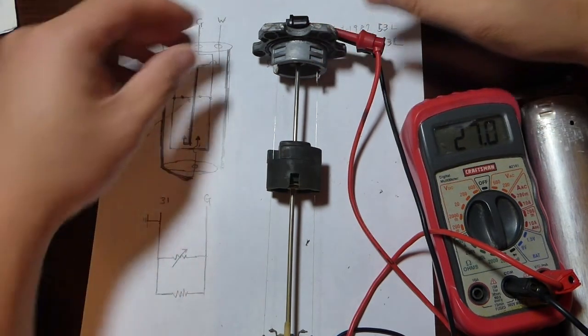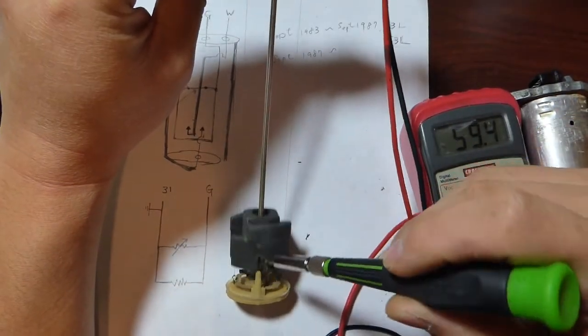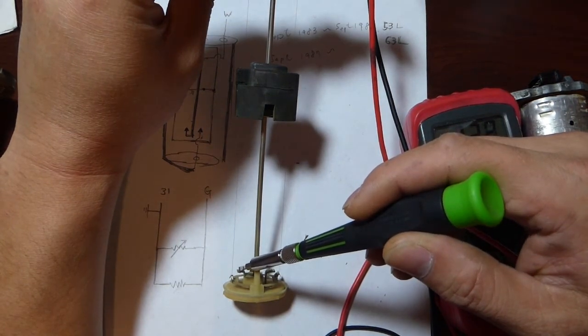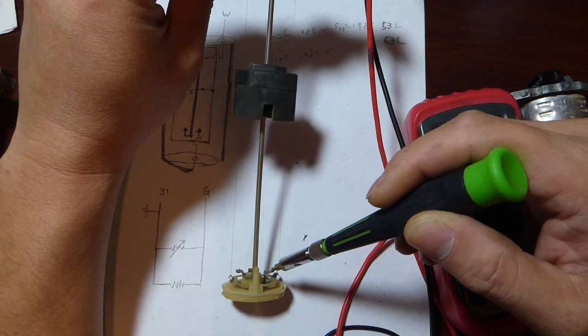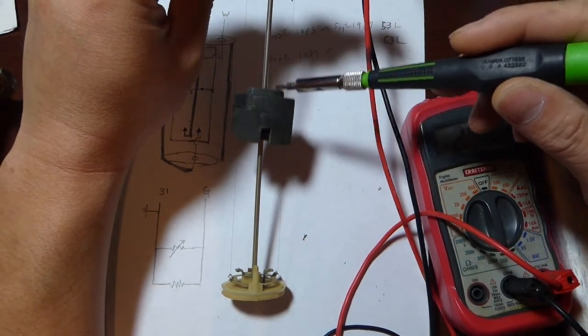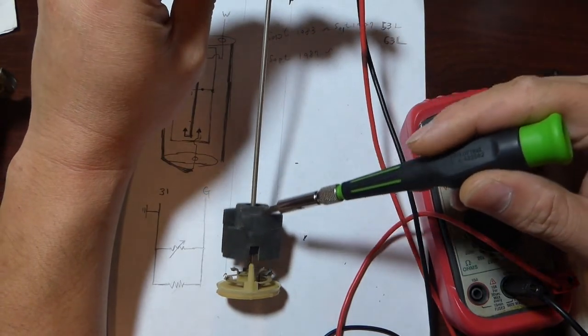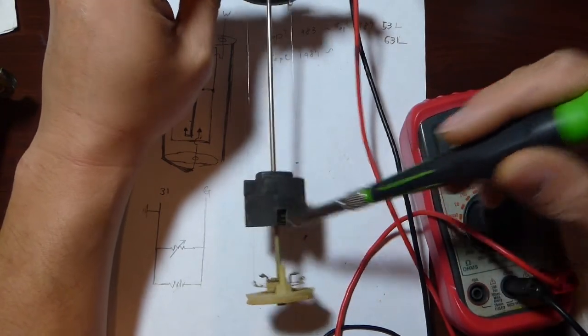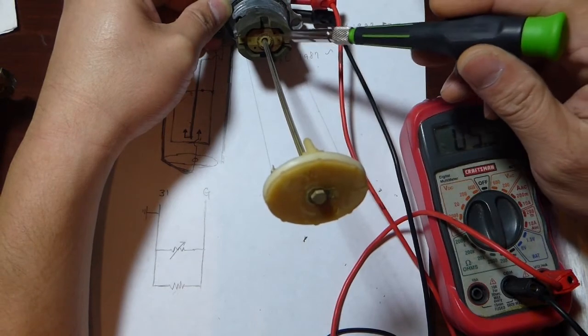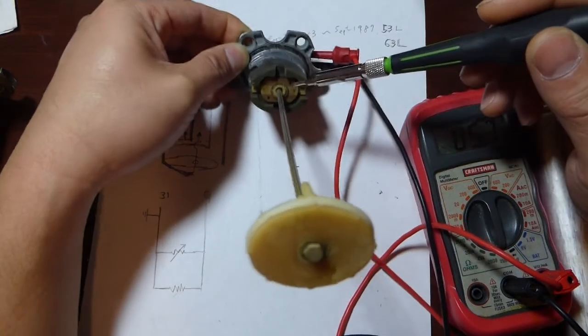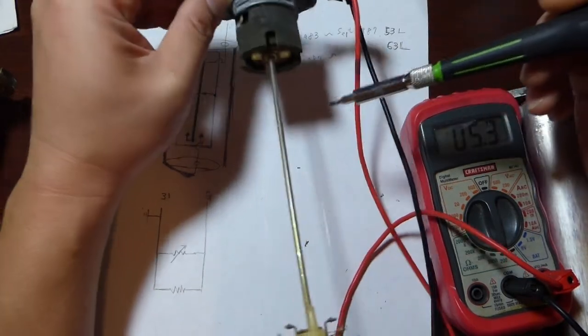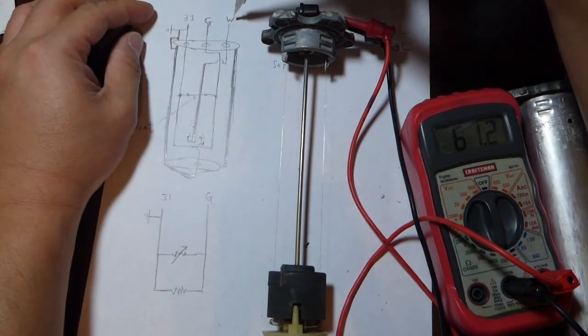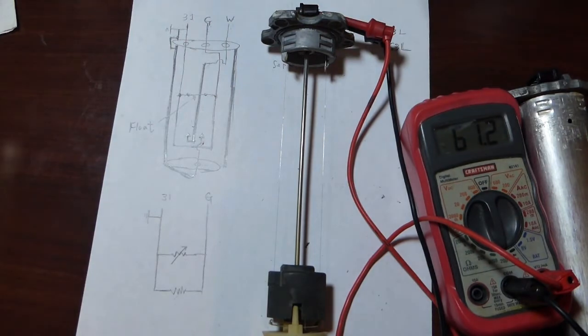Let me show you the exact two pins on the unit. This is the pin that goes to the W terminal. This is the pin that goes to the ground. When the float drops all the way to the bottom, it basically shorts out those two pins. There's the contact metal. You can see the two indentations, basically shorting those two pins. That basically shorts the terminal W to the ground.